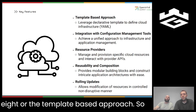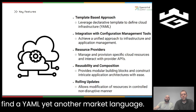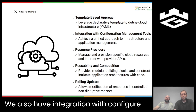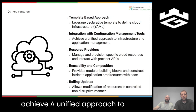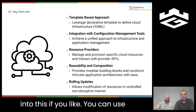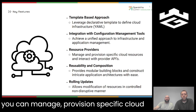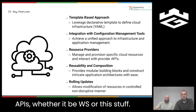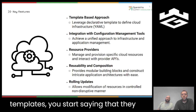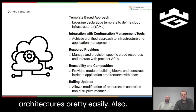The key features of Heat include a template-based approach. You write a heat template defined in YAML — yet another markup language — and this is how you define your cloud infrastructure. There's also integration with configuration management tools, so you can achieve a unified approach to infrastructure and application management, incorporating tools like Ansible and Terraform. You can use several different resource providers to manage and provision specific cloud resources that interact with provider APIs, whether AWS or OpenStack. Templates build like building blocks, so you can combine pieces to construct different application architectures easily.